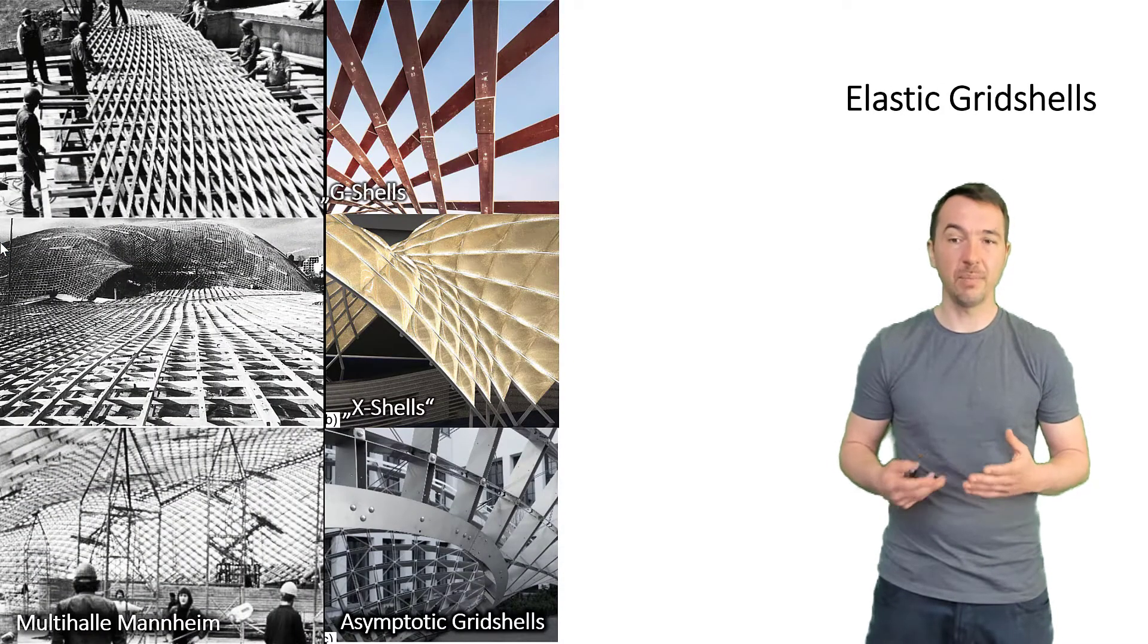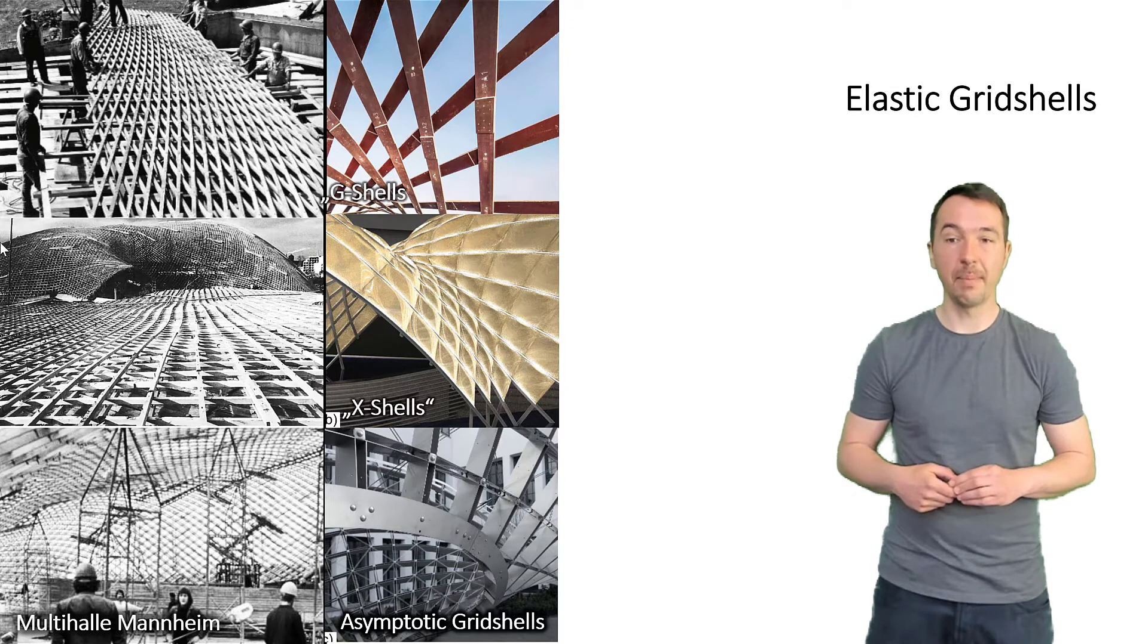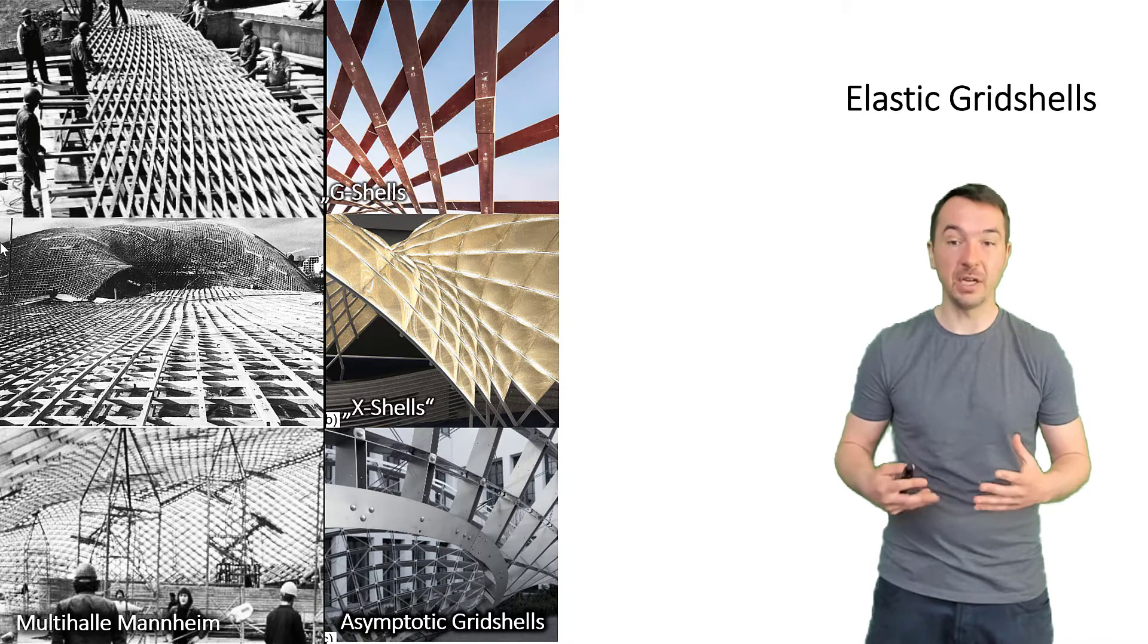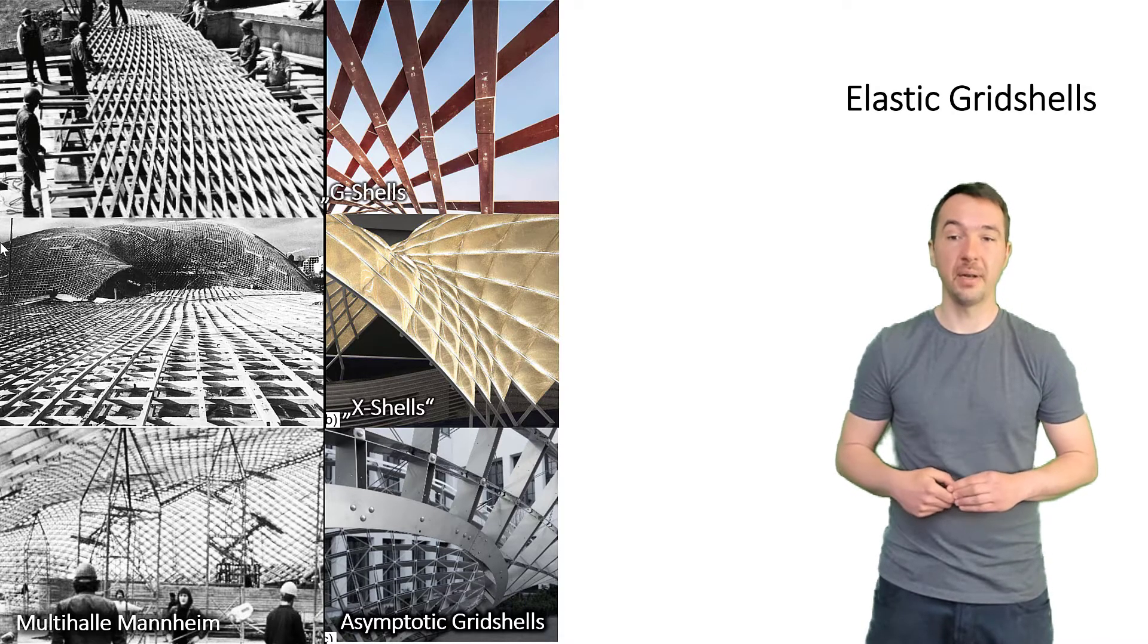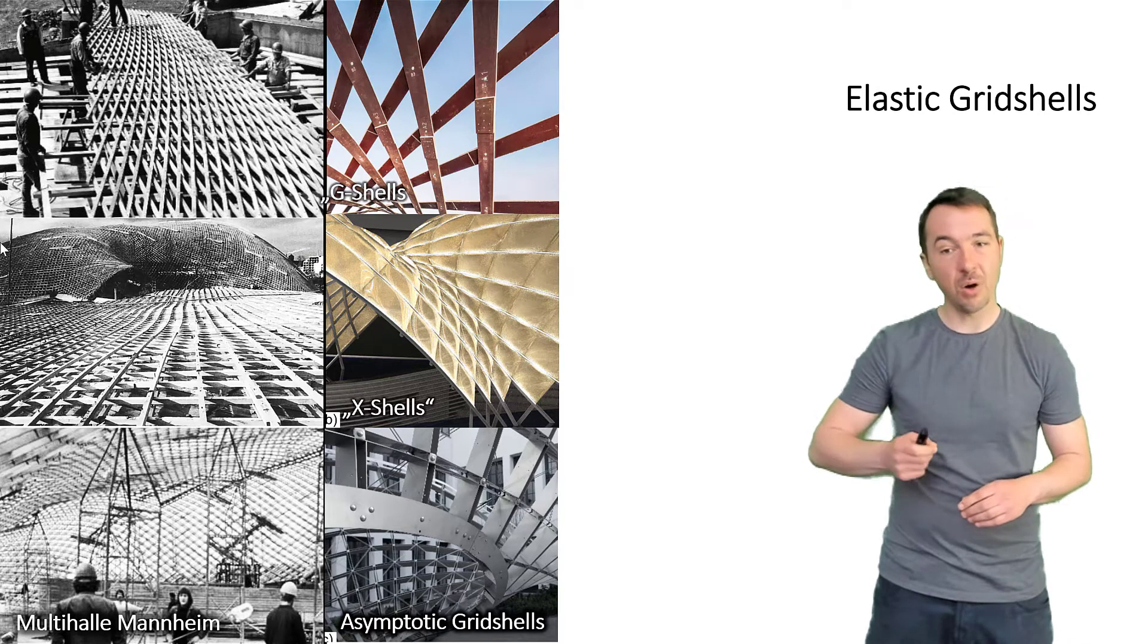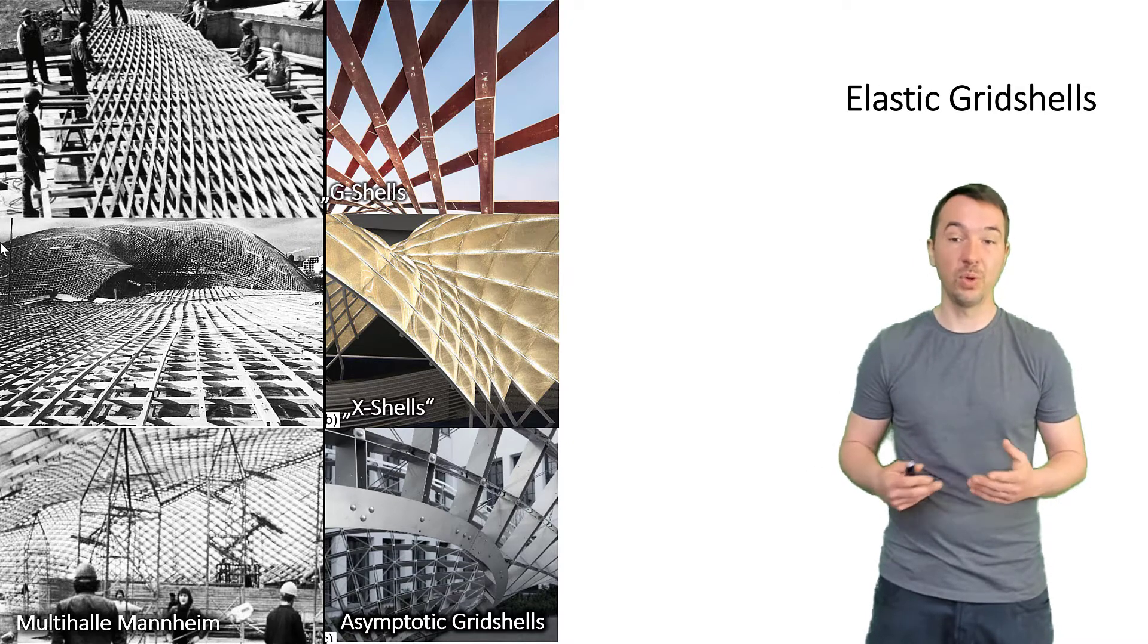One development is the field of elastic grid shells. While flexible grid members allow deformation, load-bearing capacities are gained by the spatial shape. One of the famous examples is the Multi-Halle Mannheim, where a regular grid is pushed into the desired shape by temporary stands and then locked by fixing supports, the grid intersection angles and adding a few bracings.